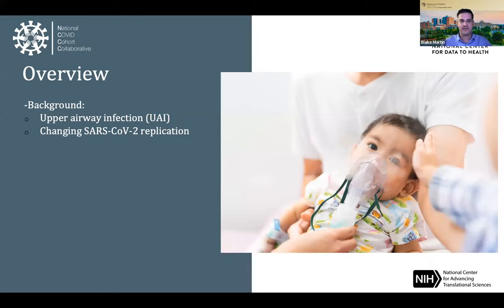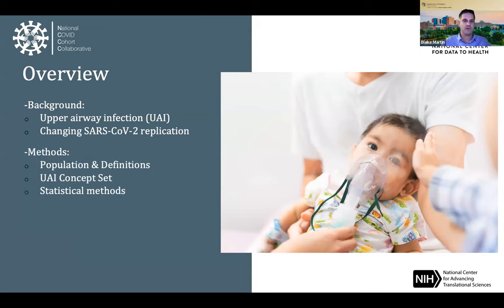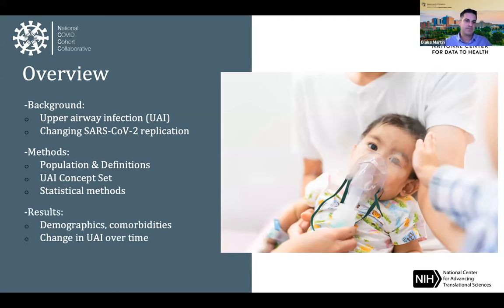Today I'll cover: the clinical entity of upper airway infection, changing SARS-CoV-2 replication and the biological mechanism for why children with Omicron may be at higher risk, the study population, specific definitions, our upper airway infection (UAI) concept set, statistical methods, comparisons between pre-Omicron and Omicron era children, and differences in demographics, comorbidities, and how UAI has changed over time.